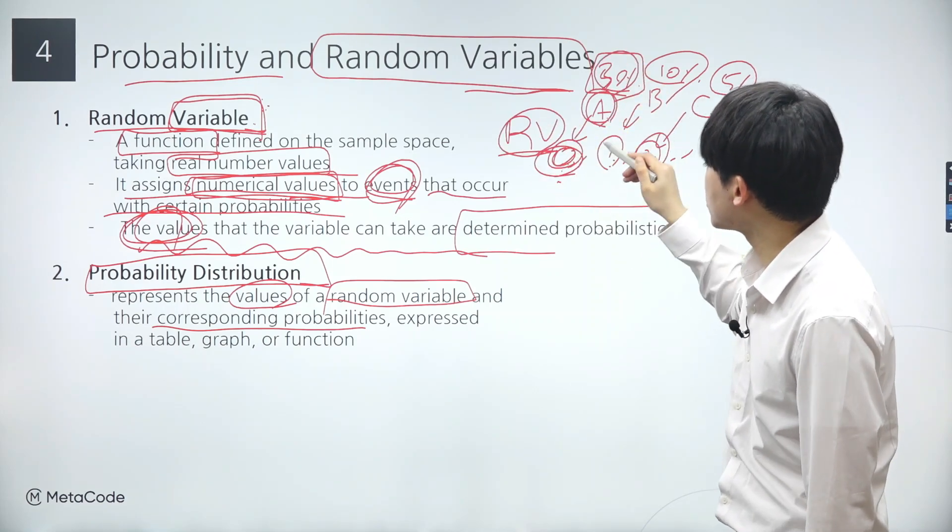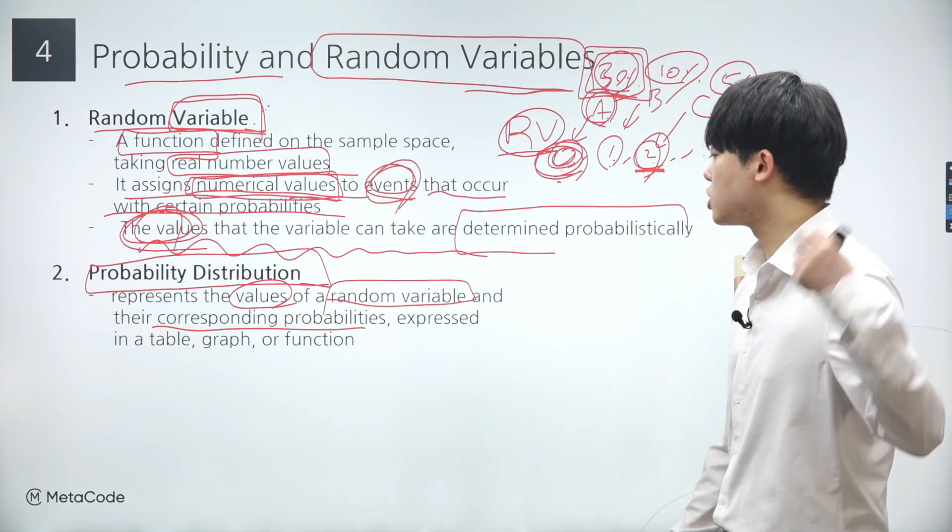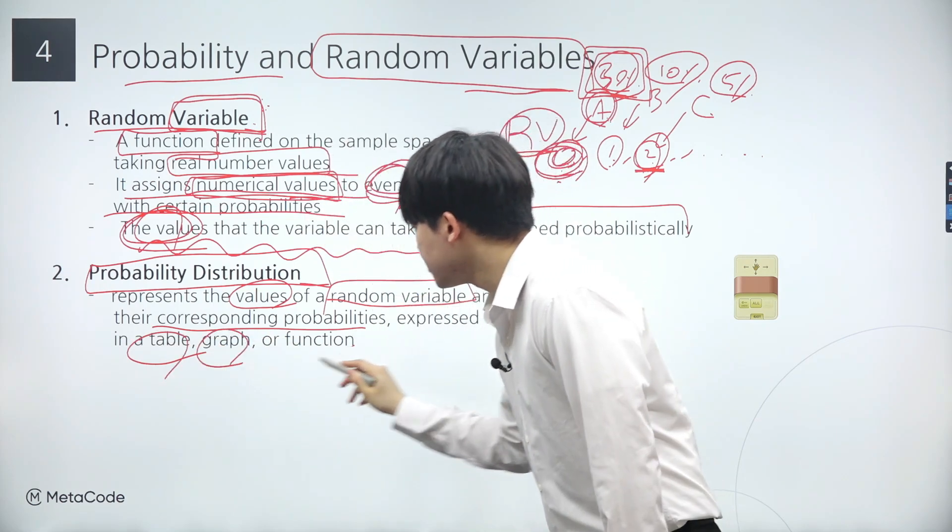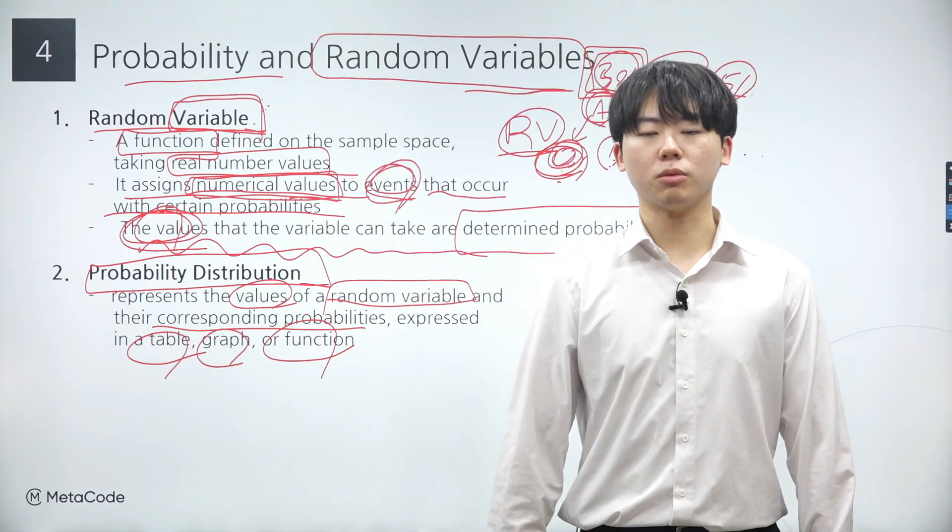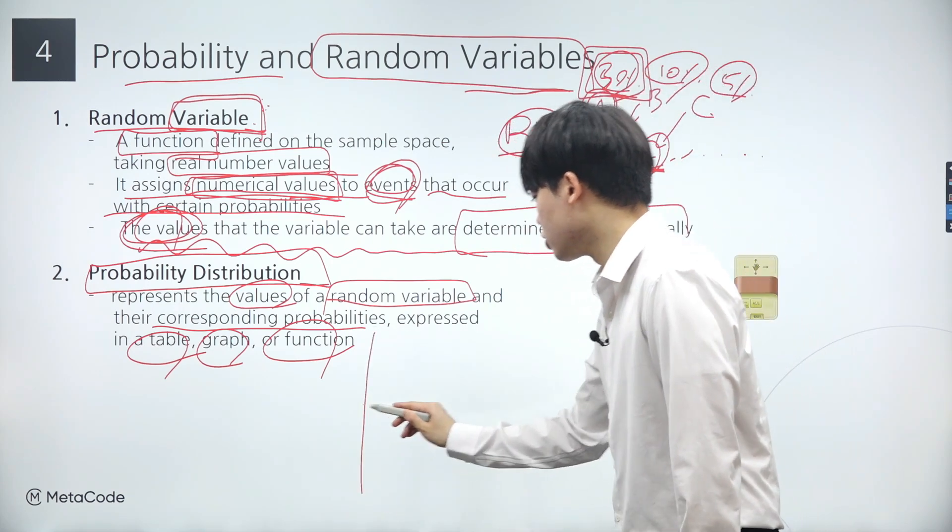A probability distribution then maps the values of a random variable to their respective probabilities. And this mapping can be expressed through a table, graph, or mathematical function.